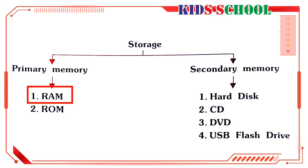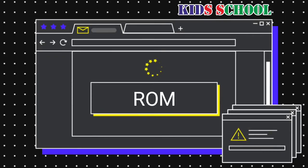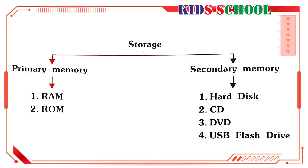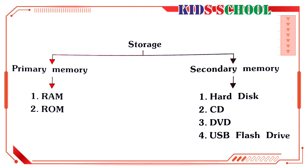For example, one character — it could be a number or a letter — is equal to eight bits, and eight bits are equal to one byte. Read-Only Memory — dear students, ROM stores programs which tell the computer how to work. For example, when you switch on the computer, it is ROM that sends the necessary instructions to the CPU to get going.